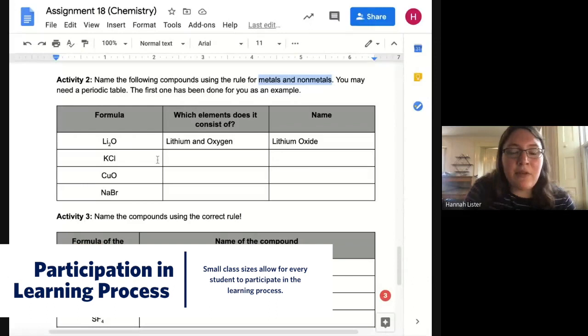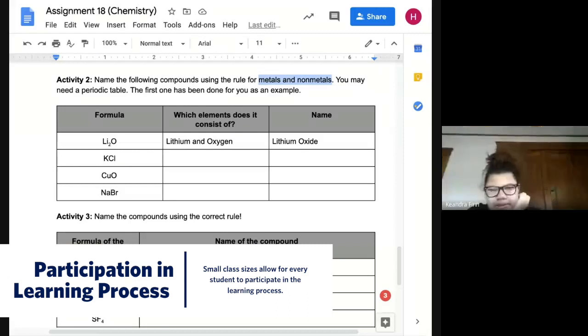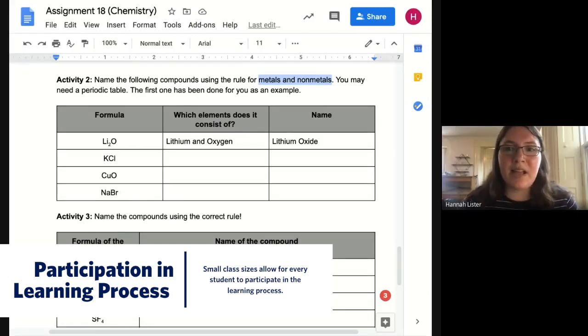So Kiki, if you could do KCL. Sophia, I'm going to have you do CuO. And then Melissa, can you do NaBr? All right, Kiki, go for it. Potassium and chlorine. So the name is potassium chloride. Awesome. Nice. Potassium chloride.